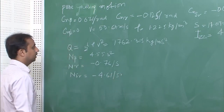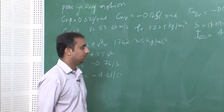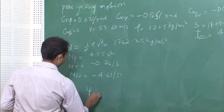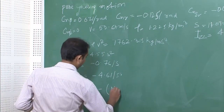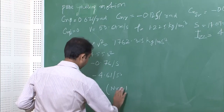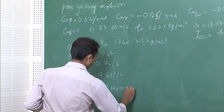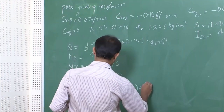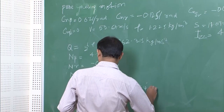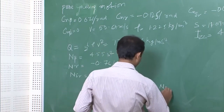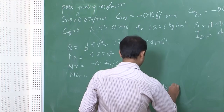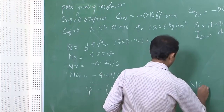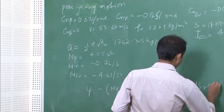Substituting these values into the relevant formulas, we get: dynamic pressure Q = 0.5×rho×V² = 1762.315 N/m², n_beta = 4.55 s⁻², and n_r = −0.76 s⁻¹. The differential equation for pure yawing motion is: psi_double_dot minus n_beta_dot times delta_psi_dot plus n_beta times delta_psi equals n_delta_r times delta_delta_r. Since C_n_beta_dot is zero, that term vanishes.